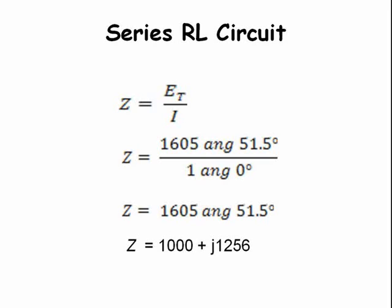Impedance equals voltage over current. Since current equals 1 amp, it can be written as 1 at an angle of 0 degrees. Written in rectangular form, this gives us impedance Z equals 1000 plus J1256.